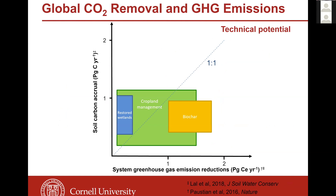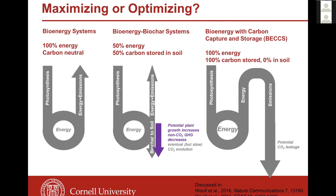Looking at greenhouse gas emission reductions versus soil carbon accrual across different systems: biochar has a slightly higher greenhouse gas emission reduction than soil carbon accrual alone because of other moving parts. Set-asides such as restored wetlands seem to have lower emission reductions than their solid carbon accrual alone, due to methane kickbacks. Cropland sits somewhere in the middle. They're all roughly in the same order of magnitude.